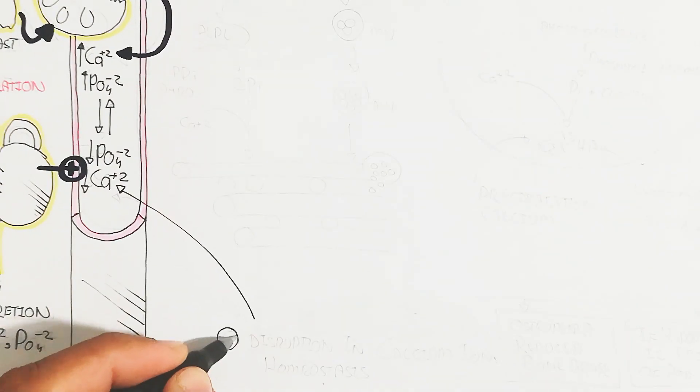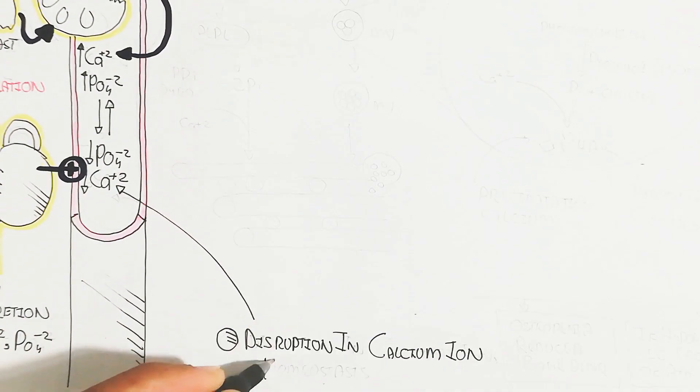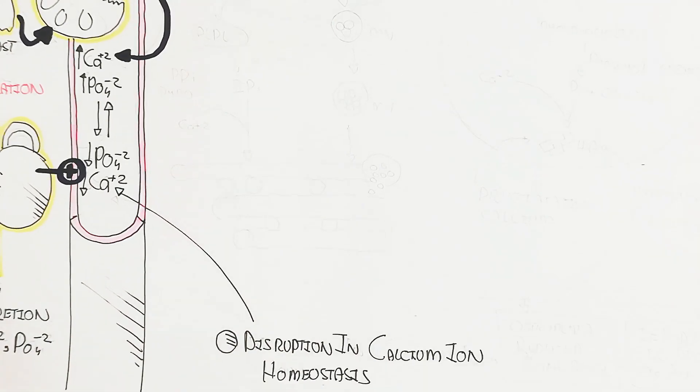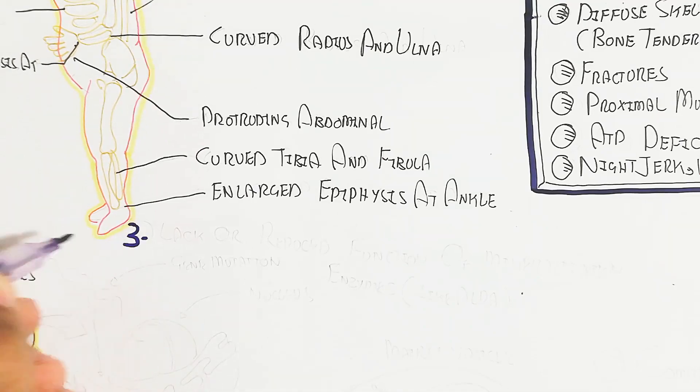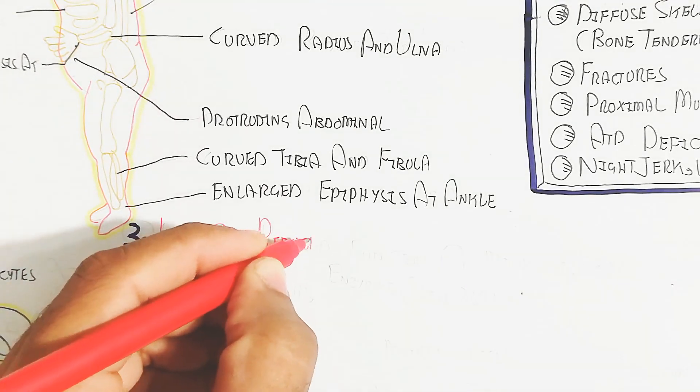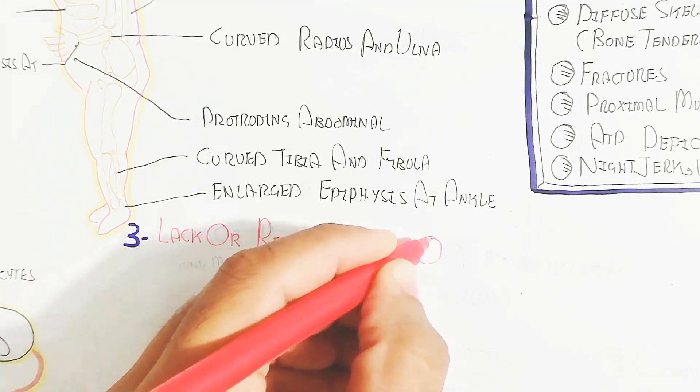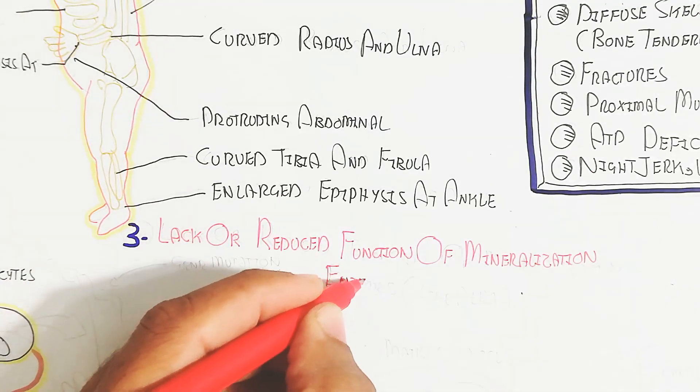The disruption in calcium ion homeostasis will lead to osteomalacia and rickets due to the calcium deprivation in the blood circulatory system, which will not work for the bone modeling and bone formation.